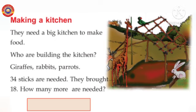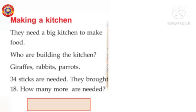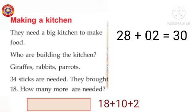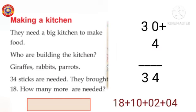First we add 10 to 18. That is 18 plus 10 equals 28. Then 2 added to 28, that is 29, 30. 4 added to 30, that is 34. Here we add 10, 2, and 4 to 18 that gives 34.